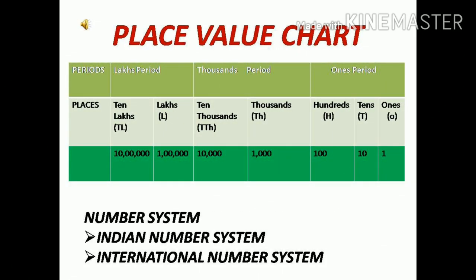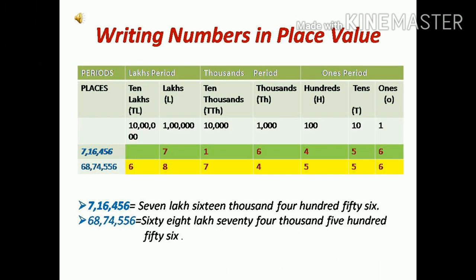Basically, we follow 2 number systems: 1 is the Indian number system, and 2 is the international number system. Here in this video, I am going to cover the Indian number system. This place value chart is representing the Indian number system. Under the ones period, we have 3 columns: 1s, 10s, and 100s. For the thousands period, we have 2 columns: 1000s and 10,000. And for lakhs, we also have 2 columns: lakhs and 10 lakhs.